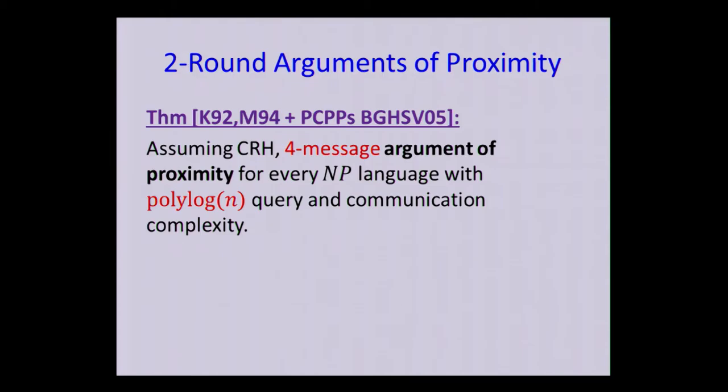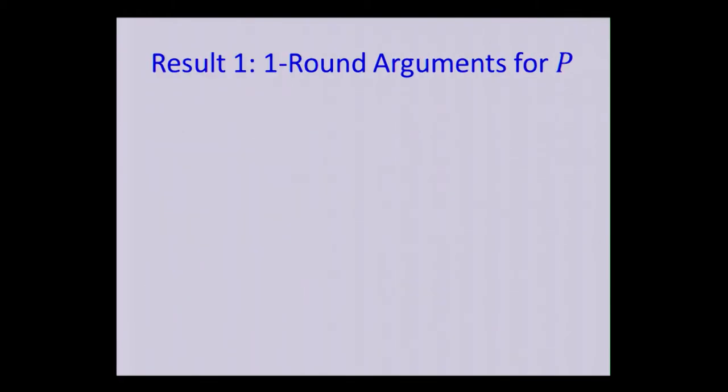Okay, so that's great. But that is, you know, four messages or two rounds. And the question is whether we can really reduce this all the way to one round. And what we show is that this isn't indeed the case. So we show a one-round argument system or argument of proximity for every language in P.